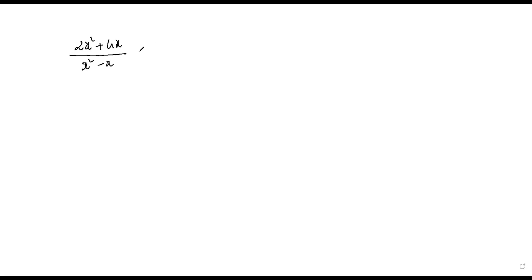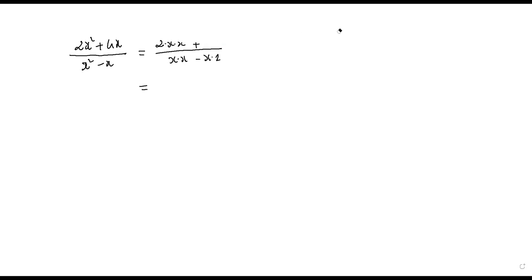The question is to simplify this. You can factorize the numerator by 2x — four x is two times two times x. So you can factorize the numerator by 2x, giving 2x times x plus two.